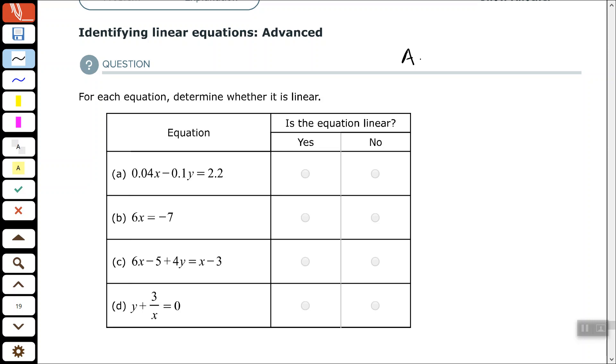So the standard form for a linear equation is Ax plus By equals C, where A, B, and C are integers, and both A and B cannot be equal to zero at the same time.